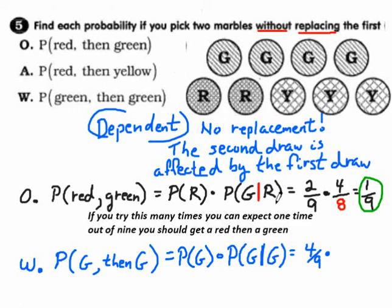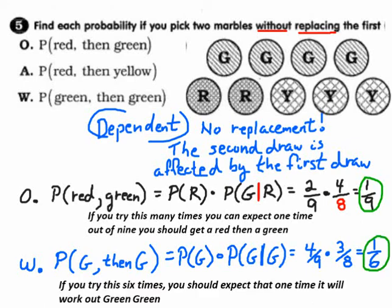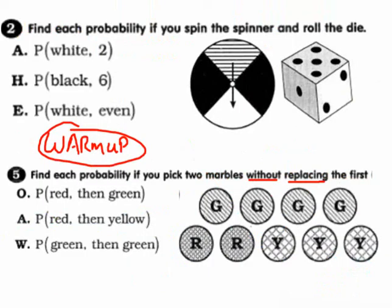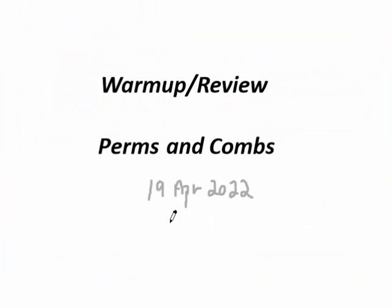How many greens are in there? Four out of nine. For the second draw, one green is gone — in your pocket, not replaced. So there are eight marbles left and only three greens remaining. That gives (4/9) × (3/8) = 12/72 = 1/6. So if you try this six times, you'd expect green then green to happen once on average. Hopefully that catches you up after three or four days of snowstorm and Easter break!